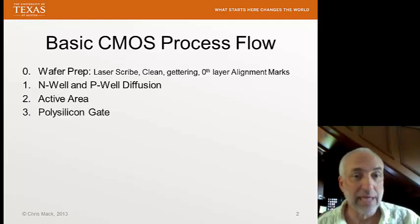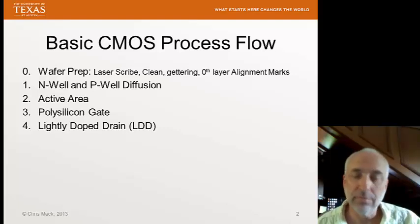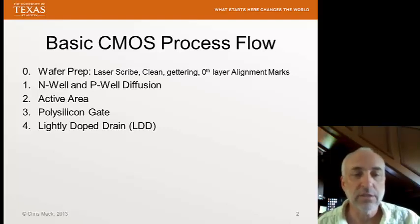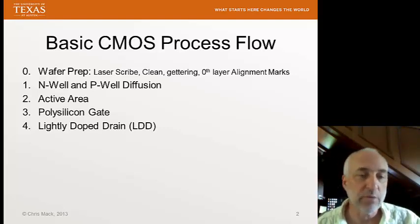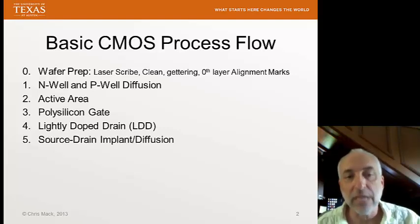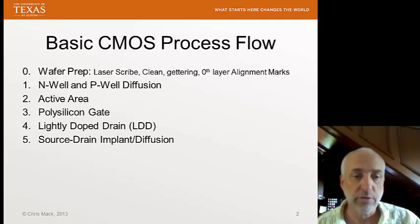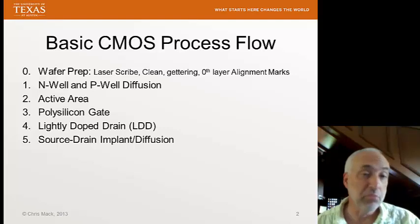Then we'll form our polysilicon gate — the gate of our gate-source-drain MOS transistor — and we'll do some engineering of the structures of that gate, something called a lightly doped drain, where we put sidewall spacers on the gate and do a little bit of doping. Then we'll do our main source-drain implant and diffusion to create the source and the drain. Now we've actually built a transistor.